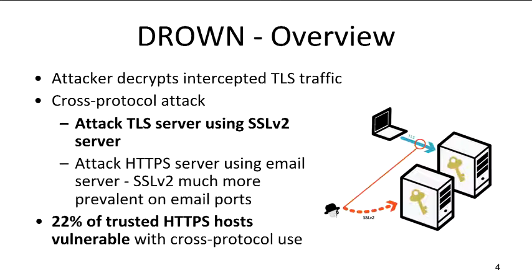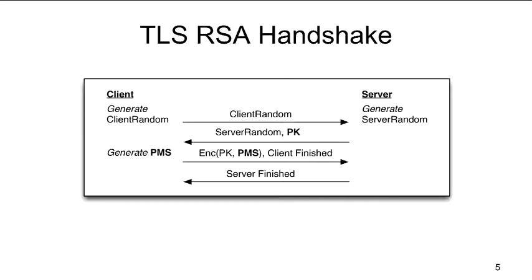Now let's give a little background on TLS. In TLS, the client initiates the connection by sending a client hello message to the server, and the server replies with a server hello message that contains the server's RSA key in a certificate. In the context of DROWN, we assume the certificate is fine — no one is attacking the certificate. The client generates a value called the pre-master secret, which is kind of the symmetric key or the basis for a symmetric key. It encrypts this value to the server's public RSA key and sends the RSA ciphertext to the server.